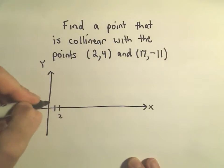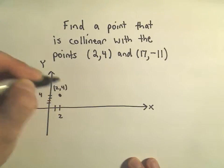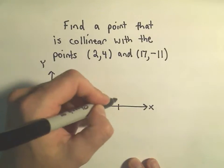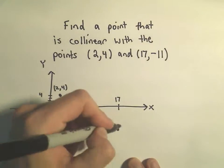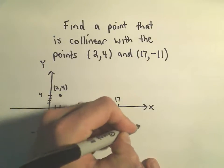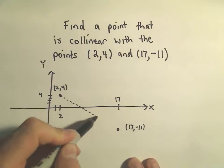If you think about the point (2, 4), we're sitting right there. And this other point, we're going all the way out to x = 17, and then going all the way down to y = -11. So those two points are sitting on the line.